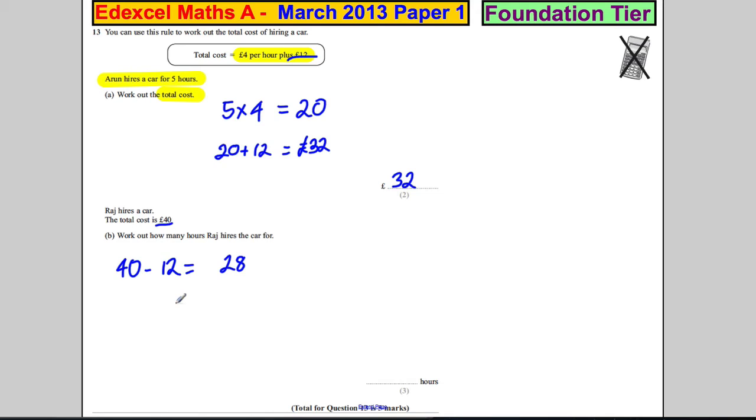That must be the amount he paid for his hours. Then we do 28 divided by 4, which tells us he must have had it for seven hours. Now if you're struggling, double check it forward: 7 times 4 is 28, and 28 plus 12 equals 40.